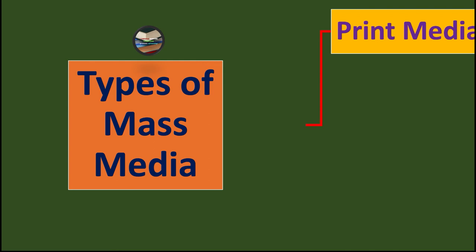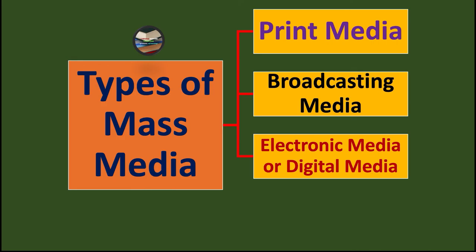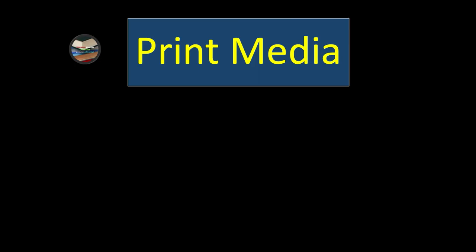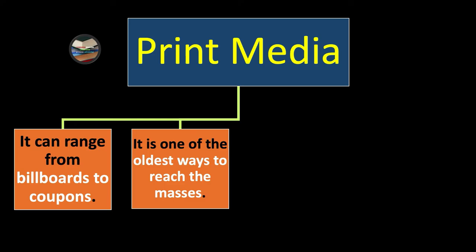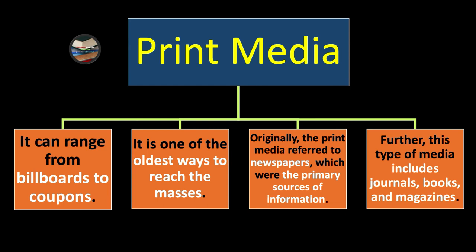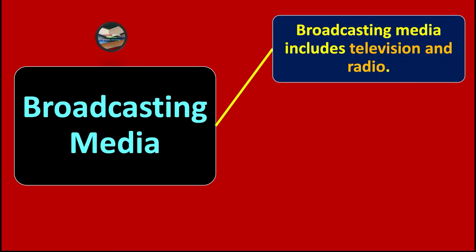Types of mass media include: print media, broadcasting media, electronic or digital media, and outdoor media. Print media ranges from billboards to coupons and is one of the oldest ways to reach the masses. Originally it referred to newspapers as primary sources of information, and also includes journals, books, and magazines.